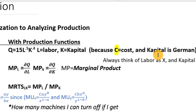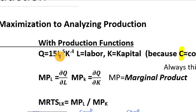Another reason we use K is that many of the early economists who did research in production functions and cost analysis were German, and in German, capital is spelled with a K. For L, we might plug in the total number of hours all workers have worked — say 100 or 200 man-hours — or the number of workers on a given day. K might be the number of machines, machine hours used, or even processing units on a cloud server.